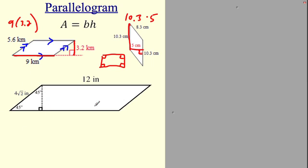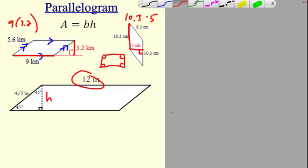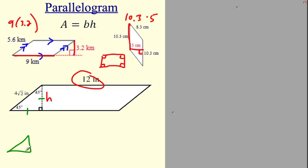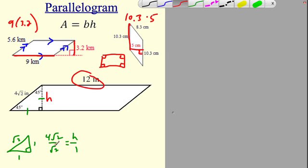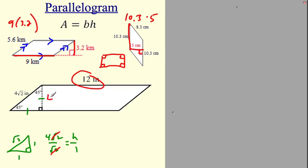Here's a parallelogram with base 12 — I need to find the height. I can see it makes a special 45-45-90 triangle. In a 45-45-90 the congruent angles mean congruent sides, and the ratio is 1:1:√2. So if the hypotenuse is 4√2, then h equals 4. So the area is 12 times 4, which is 48. Make sure to label these as inches squared — we're talking area.